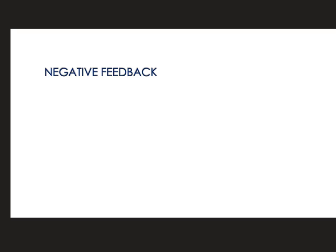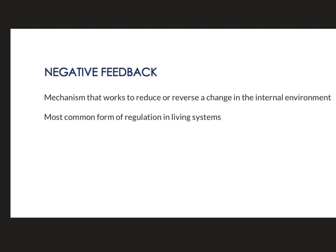So let's start talking about negative feedback, which is the most common form of regulation in living systems. What is negative feedback? Negative feedback is a mechanism that works to reduce or reverse a change in the internal environment. This goes back to the idea that in the internal environment there are set points, and when things shift from those set points there are certain features that come into play to help reverse those changes.